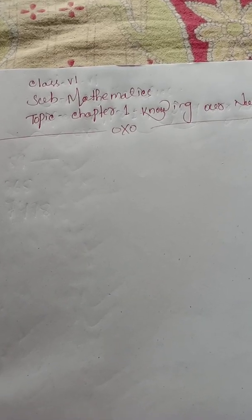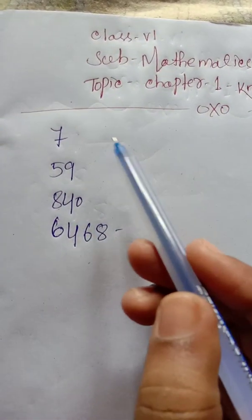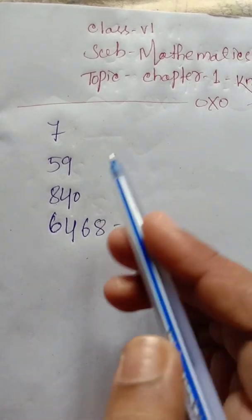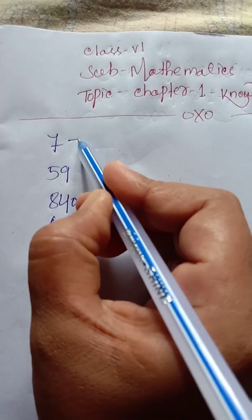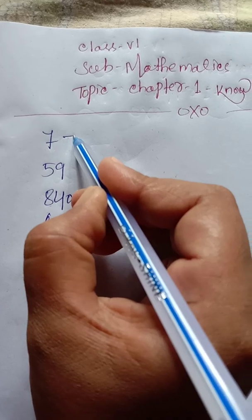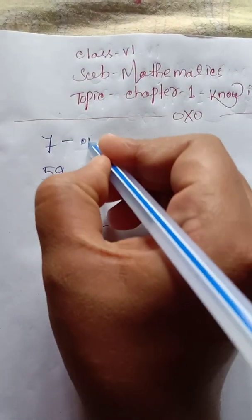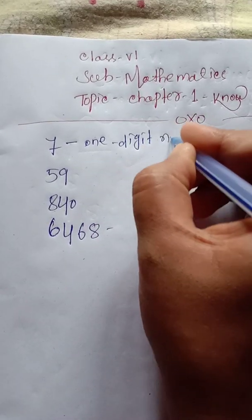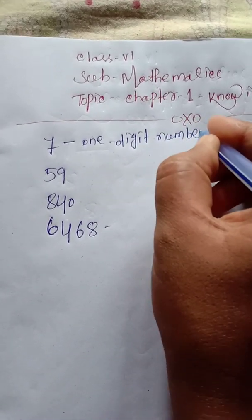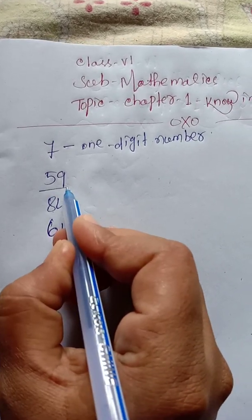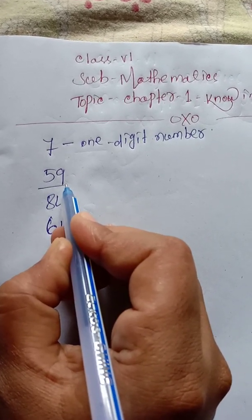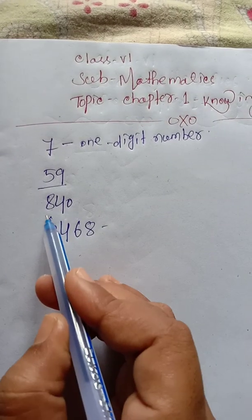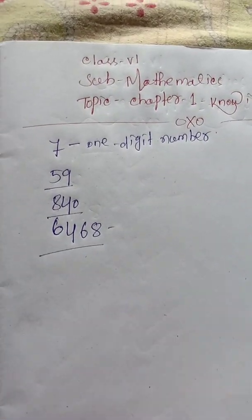The name of the chapter is Knowing Our Numbers. We will see what numbers are there. These numbers have different digits. The first number has only one digit, so this is a one digit number. Similarly, the second number has two digits, so it is a two digit number. It is a three digit number. It is a four digit number.